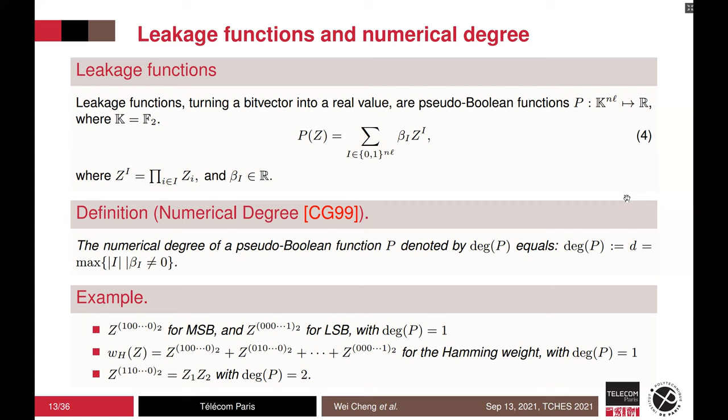Some examples are as follows. For MSB and LSB in differential power analysis, which is commonly denoted as d = 1, z^i with only one coordinate of one. In the Hamming weight leakage model, each bit appears only once and returns the sum. In both cases, the degree equals to one. And the last example has a second-order leakage with the product of two bits. It has a numerical degree equal to two.